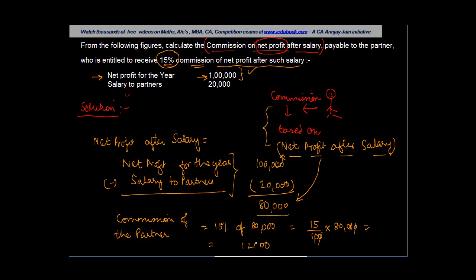So this number we have as $80,000, or simply it is 15 upon 100 into $80,000, or $12,000.